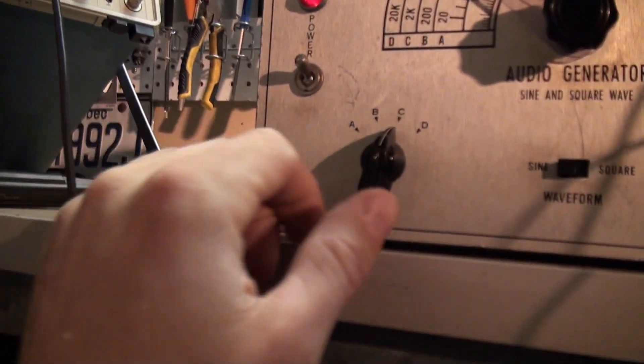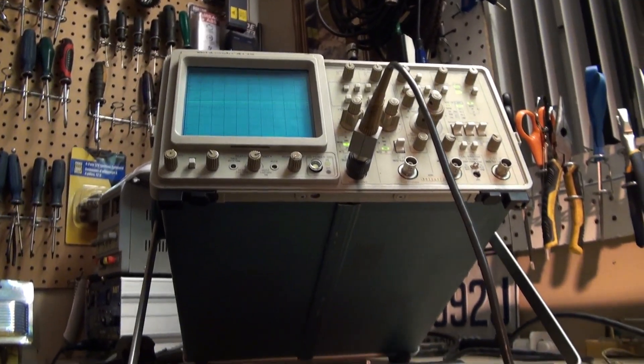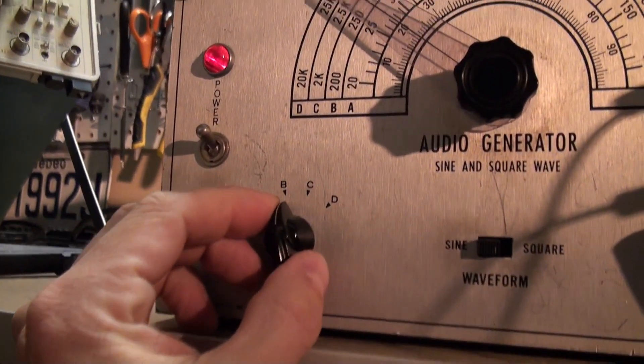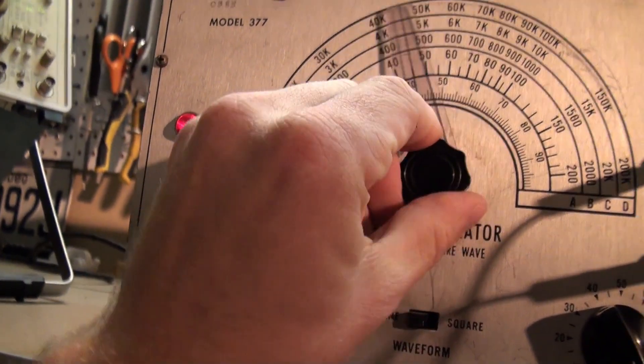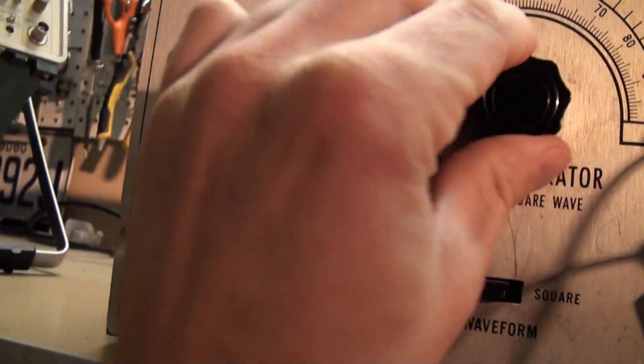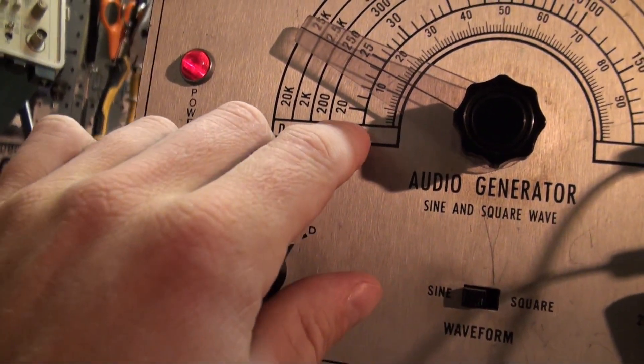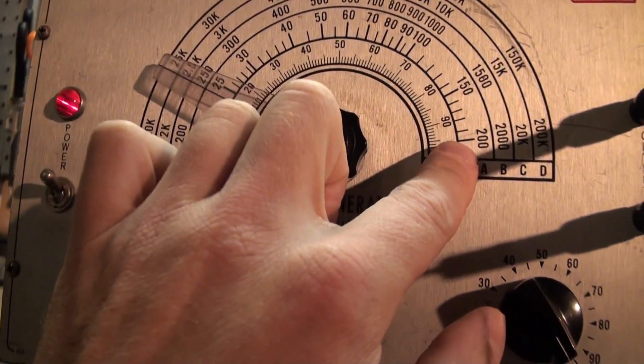We can switch between a sine or square wave with this button here. We've got various bands that we can select. That will select these different bands here with different frequencies. And with this dial here, you can select different frequencies. So let's say for band A, it starts all the way at 0 Hz, 20 Hz, all the way up to 200 Hz.